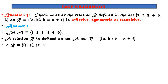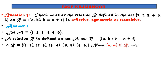The relation R = {(1,2),(2,3),(3,4),(4,5),(5,6)}. Now (1,1) does not belong to R, meaning a comma a does not belong to R. Therefore the relation is not reflexive.